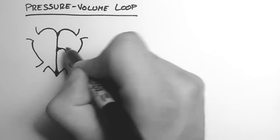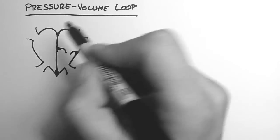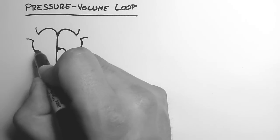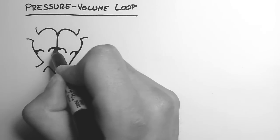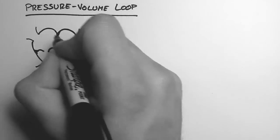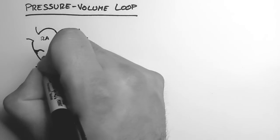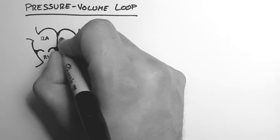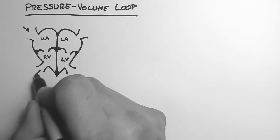So I'll just draw out an example of a heart here with the valves and the inlets and outlets. And here's the right atrium, the right ventricle, the left atrium and the left ventricle.